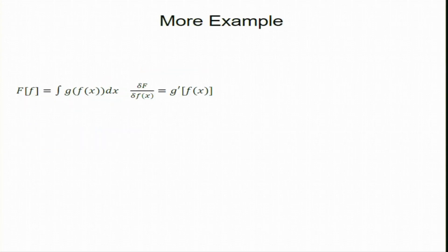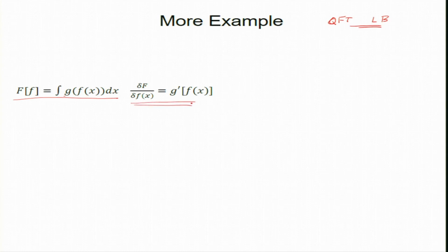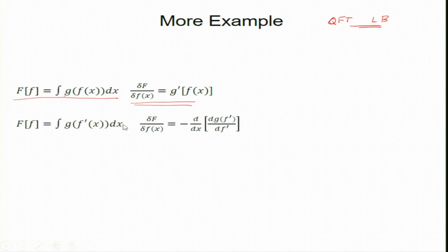More examples — I have taken these from the book 'Quantum Field Theory for the Gifted Amateur' by Lancaster and Blundell. If a functional is of the form F[f] = ∫ g(f(x)) dx, then the functional derivative is g′(f(x)). And if the functional involves the derivative f′(x), the formula includes a term −d/dx [∂g/∂f′], which arises from integration by parts.